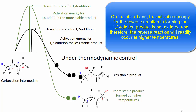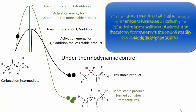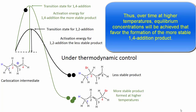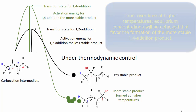On the other hand, the activation energy for the reverse reaction forming the 1,2-addition product is not as large, and therefore the reverse reaction will readily occur at higher temperatures. Thus, over time at higher temperatures, equilibrium concentrations will be achieved that favor the formation of the more stable 1,4-addition product.